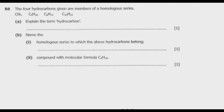The four hydrocarbons given are members of a homologous series. We have CH4, C4H10, C2H6, C4H14, C4H10, and C10H22. The question asks us to explain the term hydrocarbon.